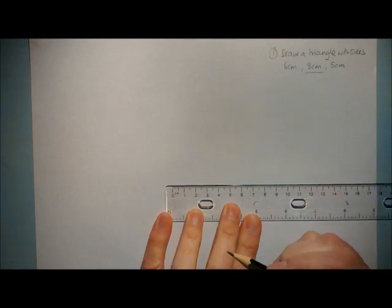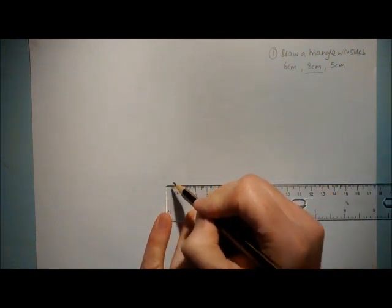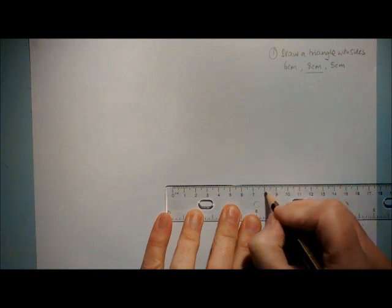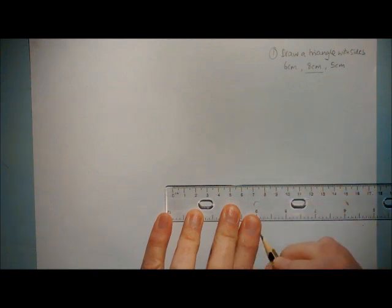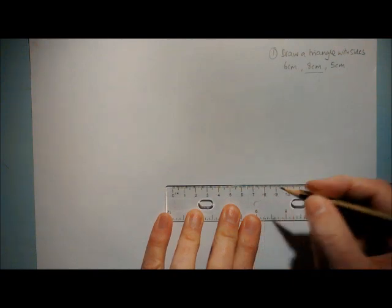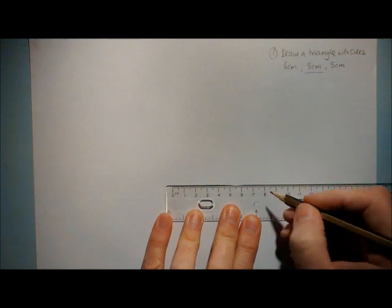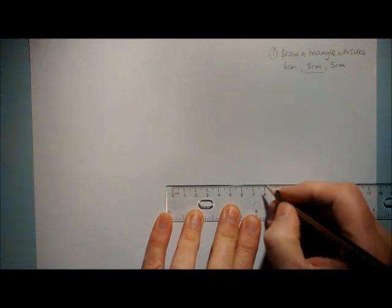Now it's important when you draw your lines to look directly on top of the ruler so that you can look straight down and measure these points. If you look from an angle you're going to get a thing called parallax error and you might just put the line slightly in the wrong place.